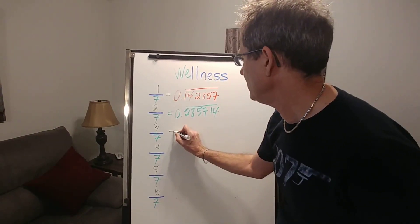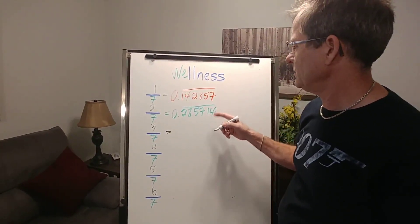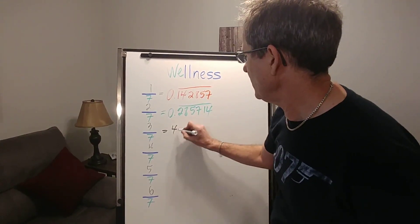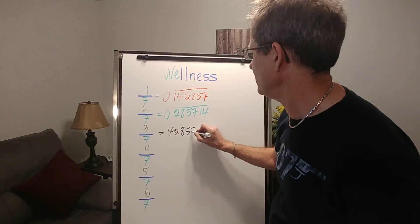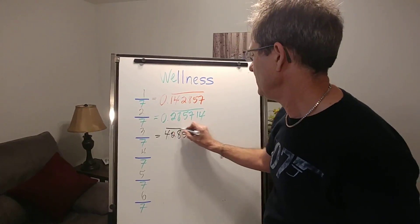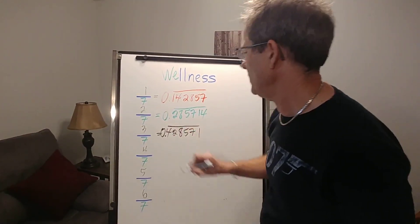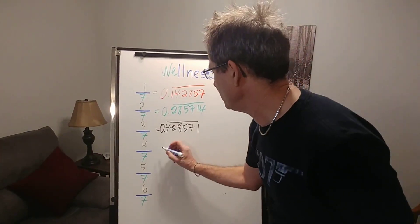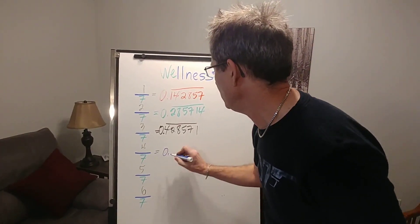3 divided by 7 would be 3 times that, which gives you 0.428571. 4 divided by 7 gives you 0.571428.